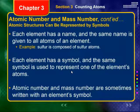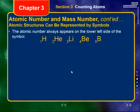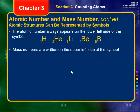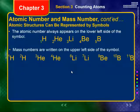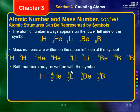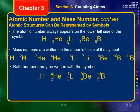Each element has a name and a symbol — the same symbol is used to represent one of the element's atoms. The atomic number and mass number are sometimes written with an element's symbol. The atomic number always appears on the lower left of the symbol, whereas the mass number always appears on the upper left. We're seeing here hydrogen with atomic number 1, helium atomic number 2, lithium atomic number 3, beryllium atomic number 4, boron atomic number 5.